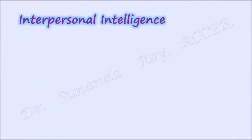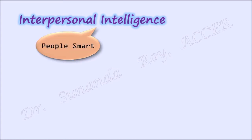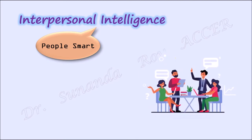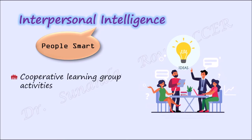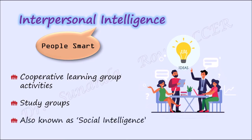The ability to effectively interact with others is the next component, known as interpersonal intelligence or people smart. This enables one to be sensitive towards others' moods, feelings, temperaments and motivations. They work well in groups and show empathy for others while coming up with collective ideas. Engaging students in cooperative learning activities, group activities or study groups help to develop interpersonal intelligence. It is also known as social intelligence, which is required for all types of professions.